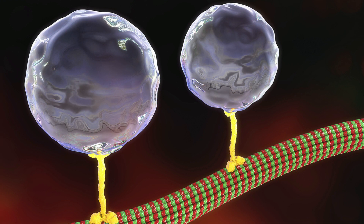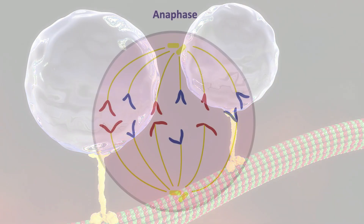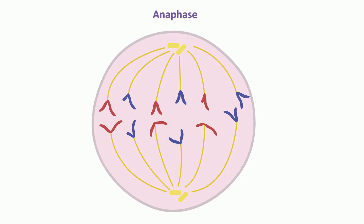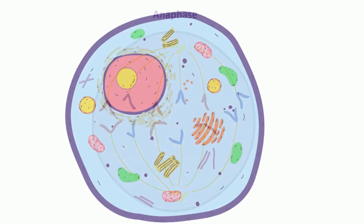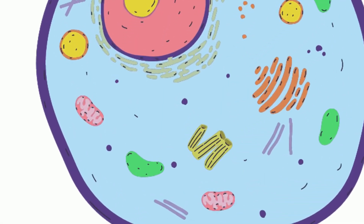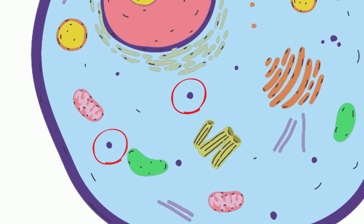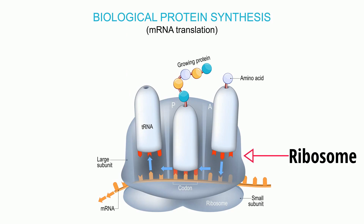They help pull the chromosomes apart during mitosis and sometimes even help the cells move. Ribosomes are tiny protein factories. They receive instructions from the DNA and convert this information into a chain of amino acids, which becomes a protein. Each type of protein has a different chain of amino acids.